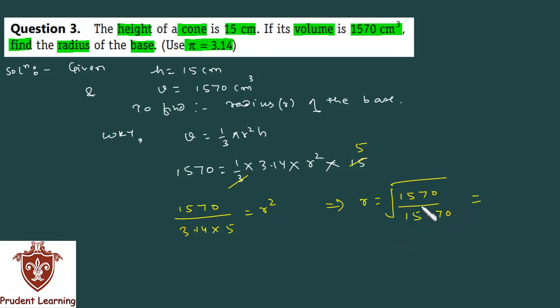Over 1570 and below 15.70. So when you divide 1570, you will get 100. And square root of 100 is 10, plus minus 10.